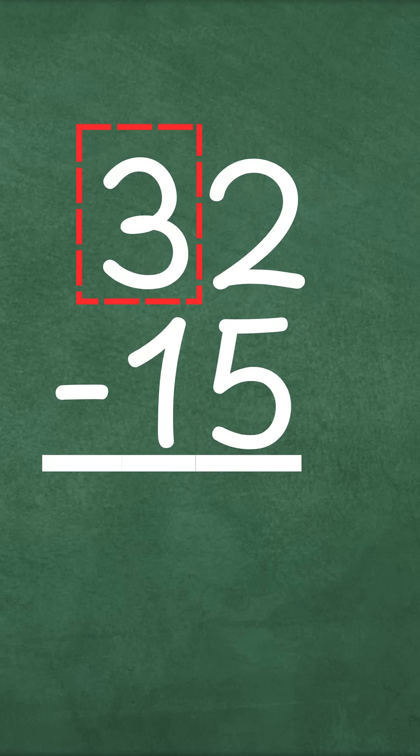To do this we borrow one 10 from the tens place. That leaves two tens. And then we add that 10 that we borrowed to the ones place. We had two ones and now because we borrowed we have 12.